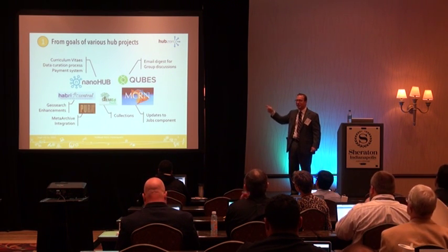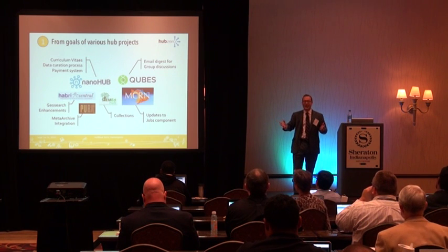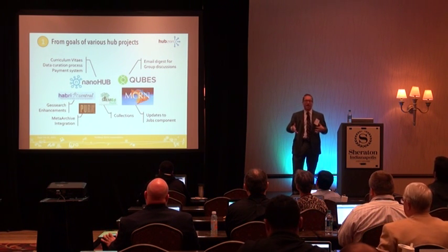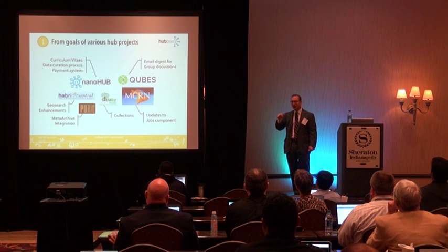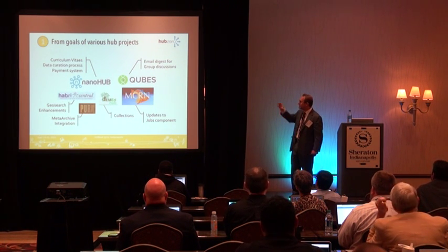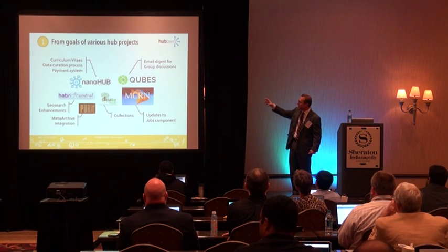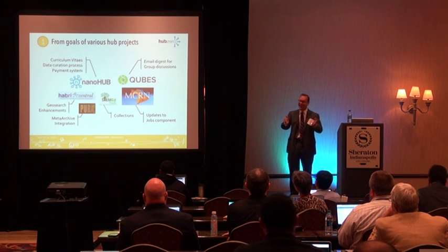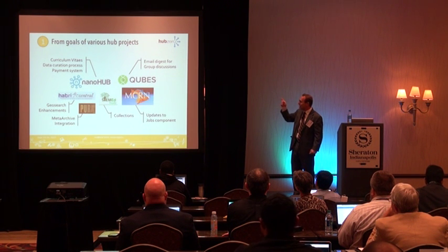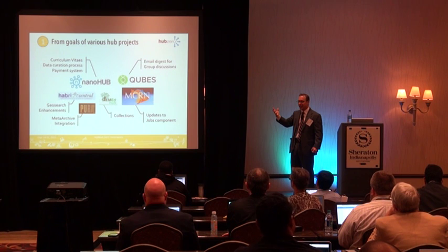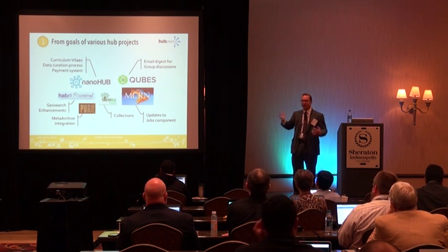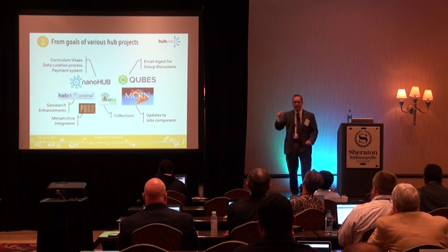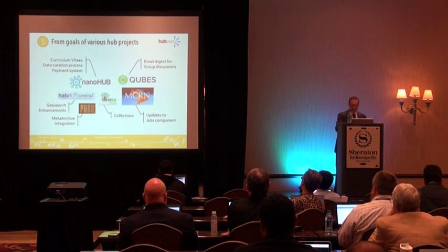For example, the email digest for group discussions — you guys all cheered about that. You can thank Drew Lamar, because Q's Hub drove that. They said if we do one thing on our project, we need email digest for group discussions now. Similarly, NanoHub pushed the CD support, which is a great feature. They wanted that badly, along with the data curation process so they could publish compact models, and the payment system they added to take credit cards. Each project has their own priorities and pushes those issues.